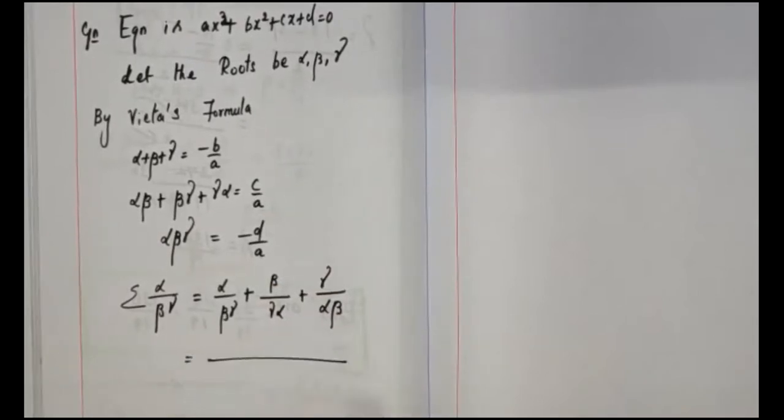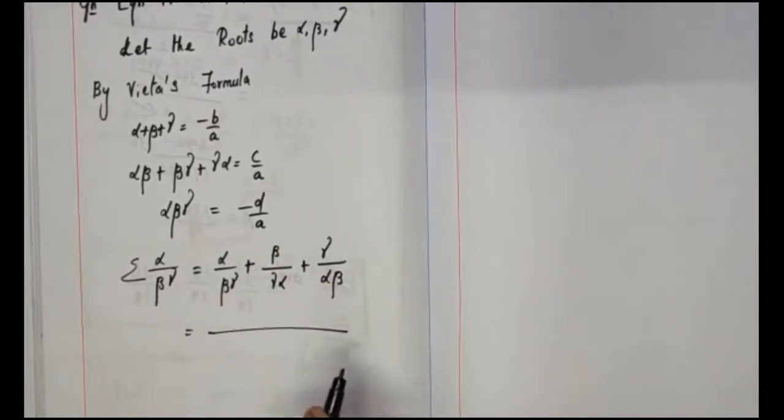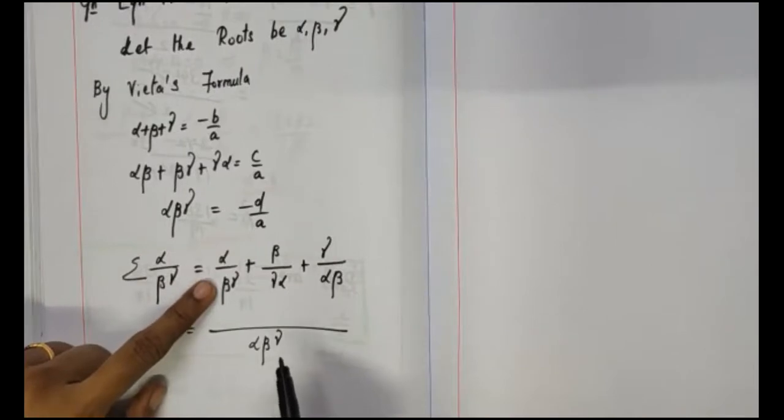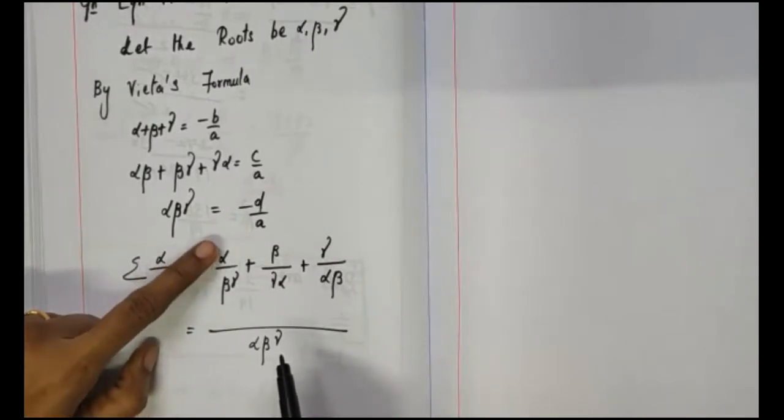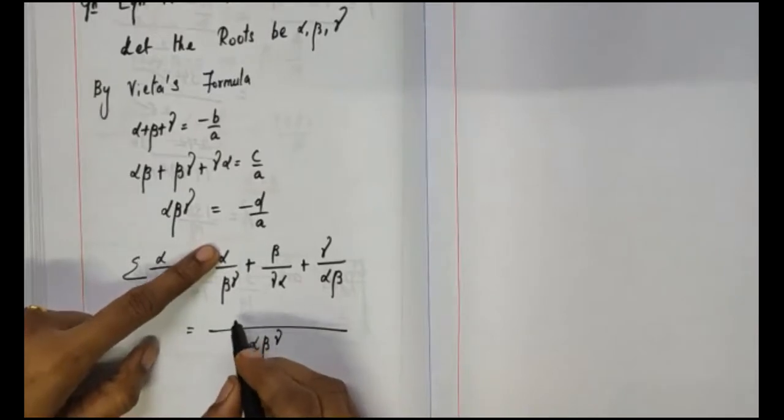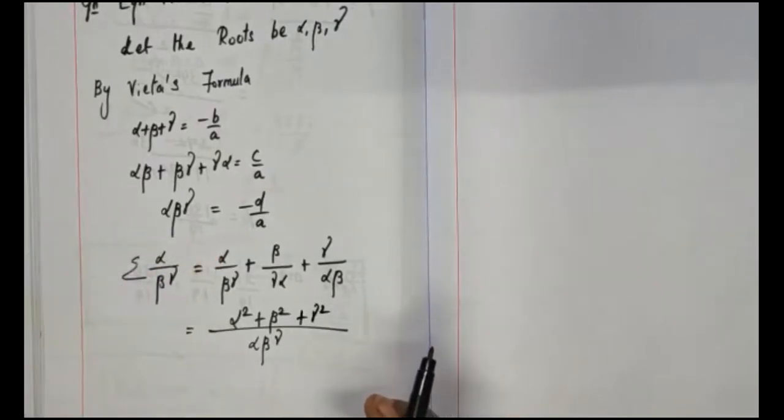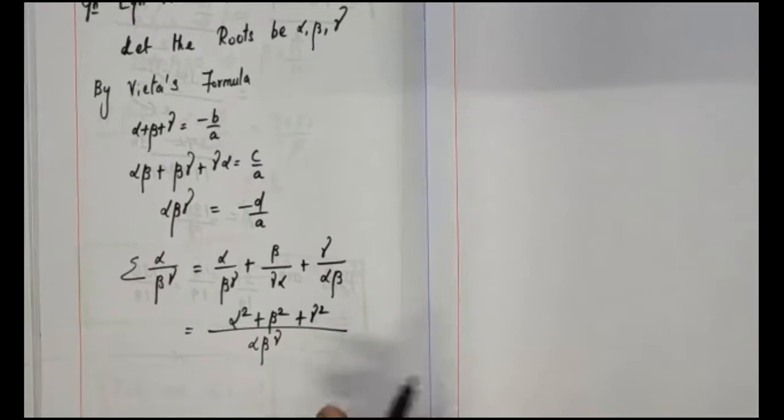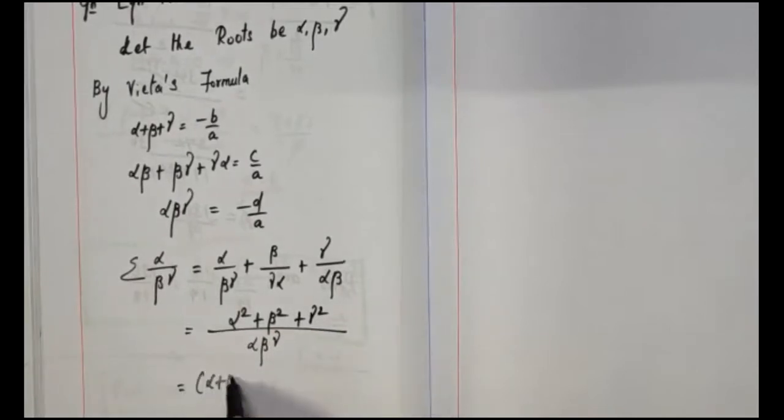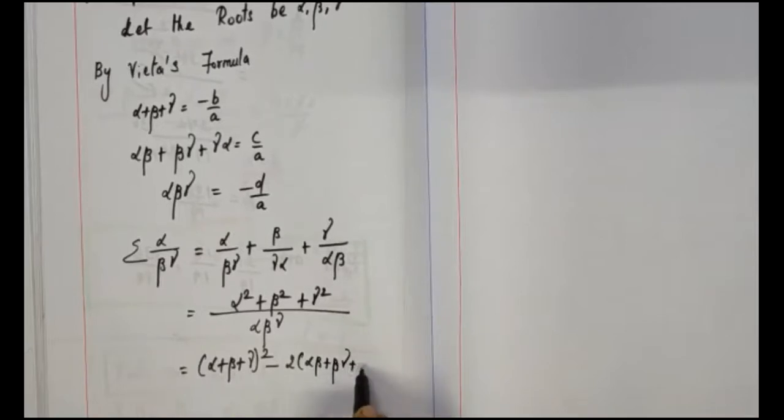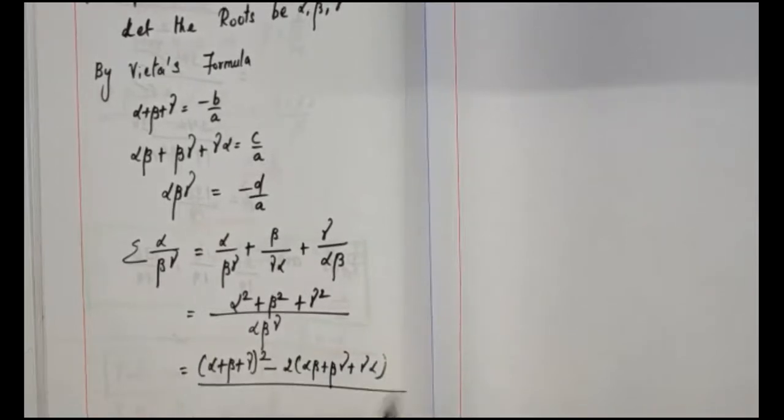Take LCM for the denominator. The LCM is alpha beta gamma. The denominator is beta gamma, so multiply the numerator with alpha to get alpha squared. Similarly, the next term is beta squared and third is gamma squared. You know the identity: alpha squared plus beta squared plus gamma squared is equal to alpha plus beta plus gamma the whole square minus two times alpha beta plus beta gamma plus gamma alpha, close the bracket, divided by alpha beta gamma.